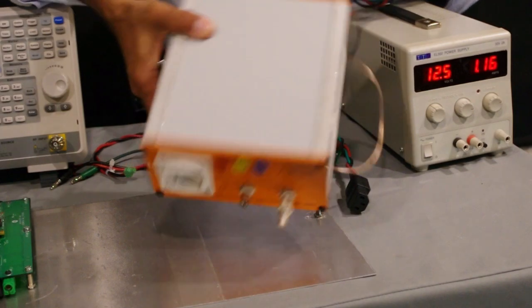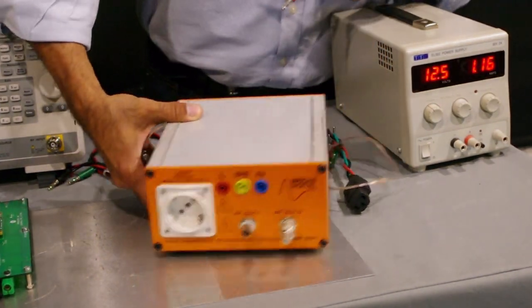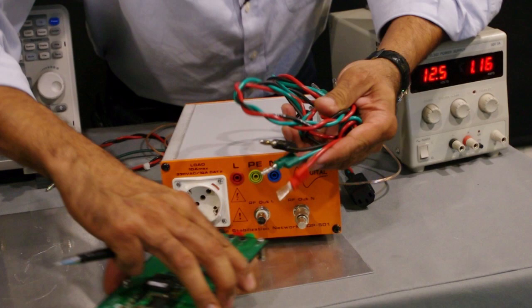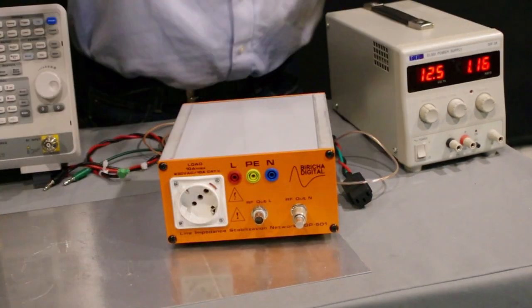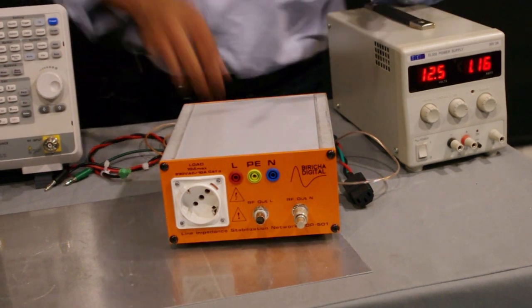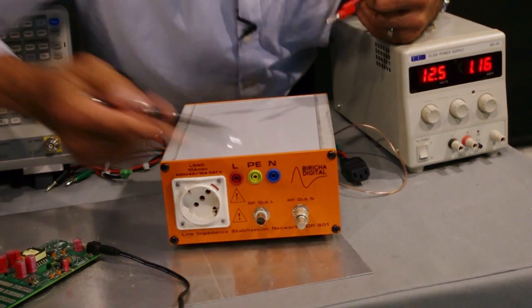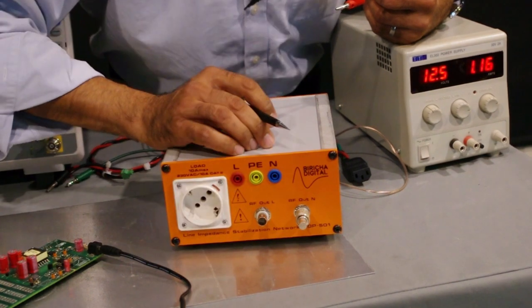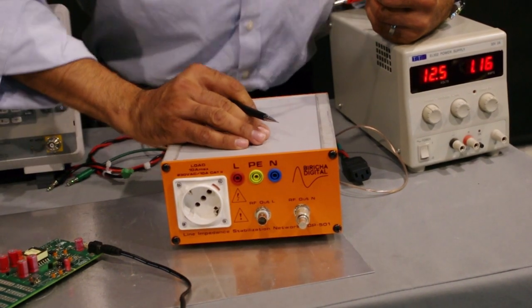That will then get connected to the back of the LISN, and then you power your product with this cable to the front. If you have got a two-wire DC system, then obviously at the front you do not have this connected because there is no chassis. Let's say that your product is in a plastic box.